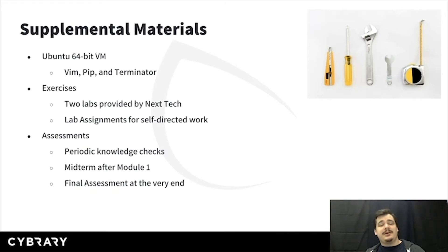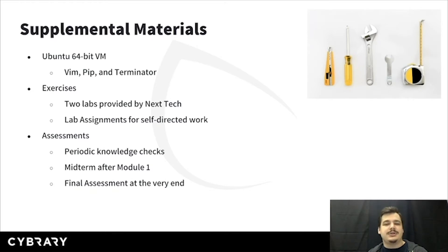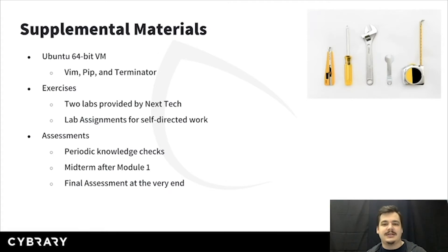Some supplemental materials — I mentioned this a little bit ago. I'm going to be using an Ubuntu 64-bit VM. I'm going to be working with Vim, PIP, and Terminator. Vim is a command line text editor — very, very useful. PIP is a Python package manager, basically an installation manager. And Terminator is just a quality-of-life upgrade for the Linux command line — it has windows, it has tabs, it just improves the experience a little bit.